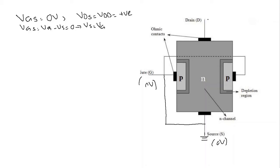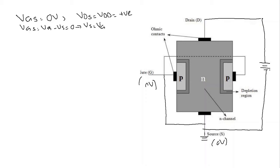Vds is equal to Vdd, some positive value. We connected a battery over here, the positive terminal to the drain and the negative terminal to the source. This was our Vds equal to Vdd. We also said that we have two PN junction depletion regions, and the PN junction at the top region becomes wider compared to the bottom region. That was the previous video.